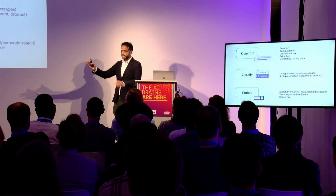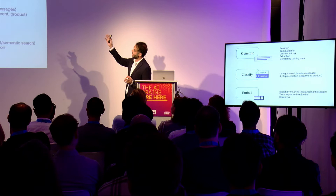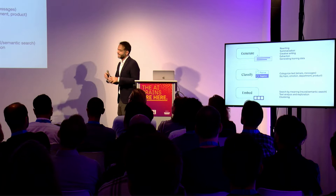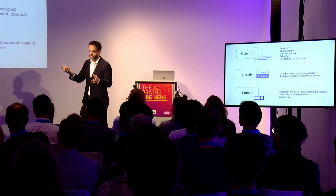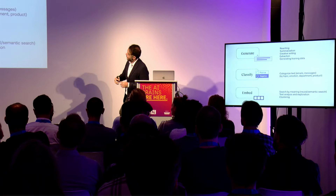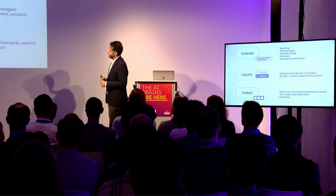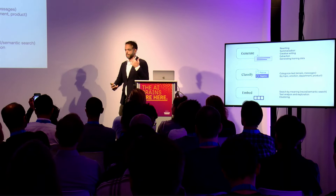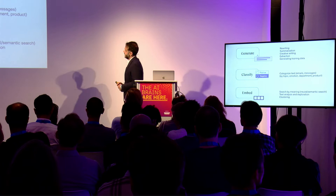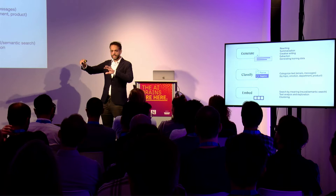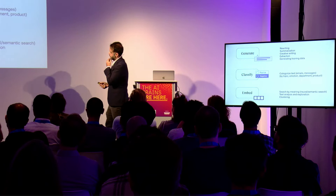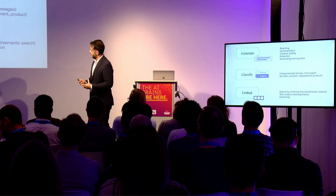These are the major capabilities. Generation is used for problem solving across many kinds of problems — rewriting, summarization, creative writing, and extracting things like named entity recognition in a more contextualized way. I'm really excited about its capability to generate training data to make other models work better. Classification is another endpoint Cohere provides — you can use large language models to classify as class A or class B, categorizing email or messages by topic or emotional content. Embedding enables use cases like searching by meaning, categorizing and clustering things together, and analyzing text.